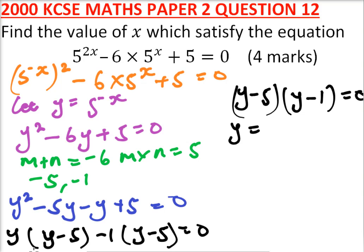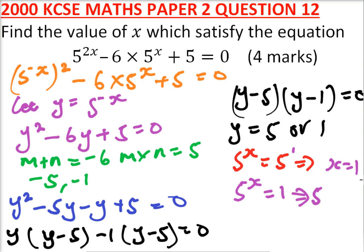Since we have defined our y to be equals to 5 to power x, it means 5 to power x is equals to 5, implying x equals 1. Or 5 to power x is equals to 1, which equals 5 to power 0, implying x is equals to 0.